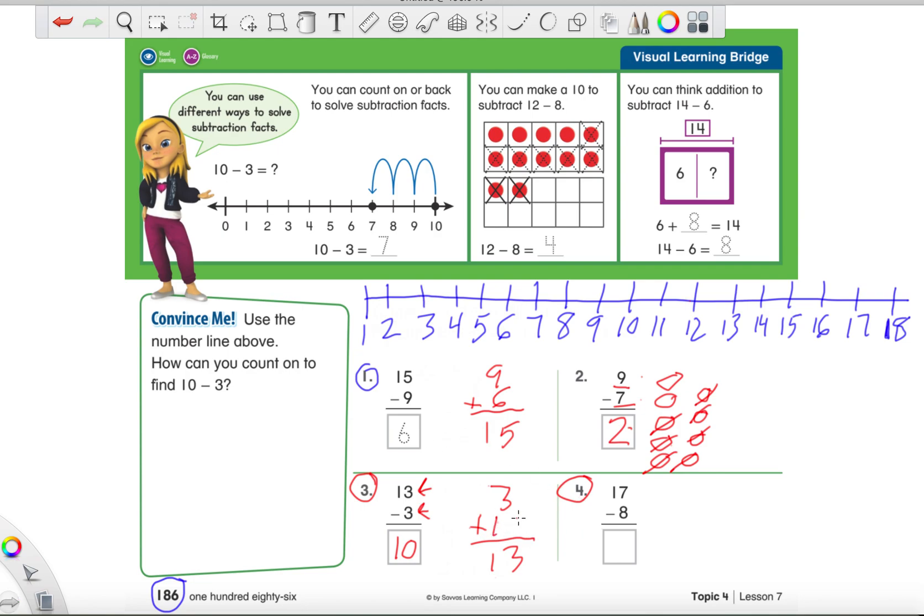Alright, now let's go over number 4 here. 17 minus 8. Now, the way I would personally prefer to do this would be to find my start number. Alright, make a dot. And, then look at my jump number, which is 8. And, make 8 jumps backwards: 1, 2, 3, 4, 5, 6, 7, and 8. I stop. And, I land on 9. So, 17 minus 8 is 9, because that's where I landed.